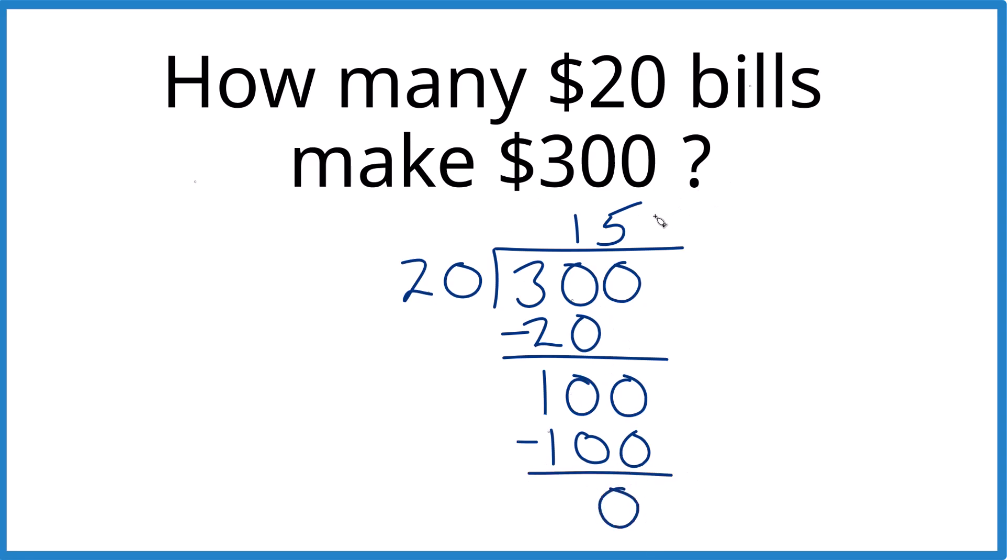So that tells us there are fifteen of these $20 bills in 300. That's what we found before. That's it. That's how many $20 bills make $300. The answer is 15 of them. This is Dr. B. Thanks for watching.